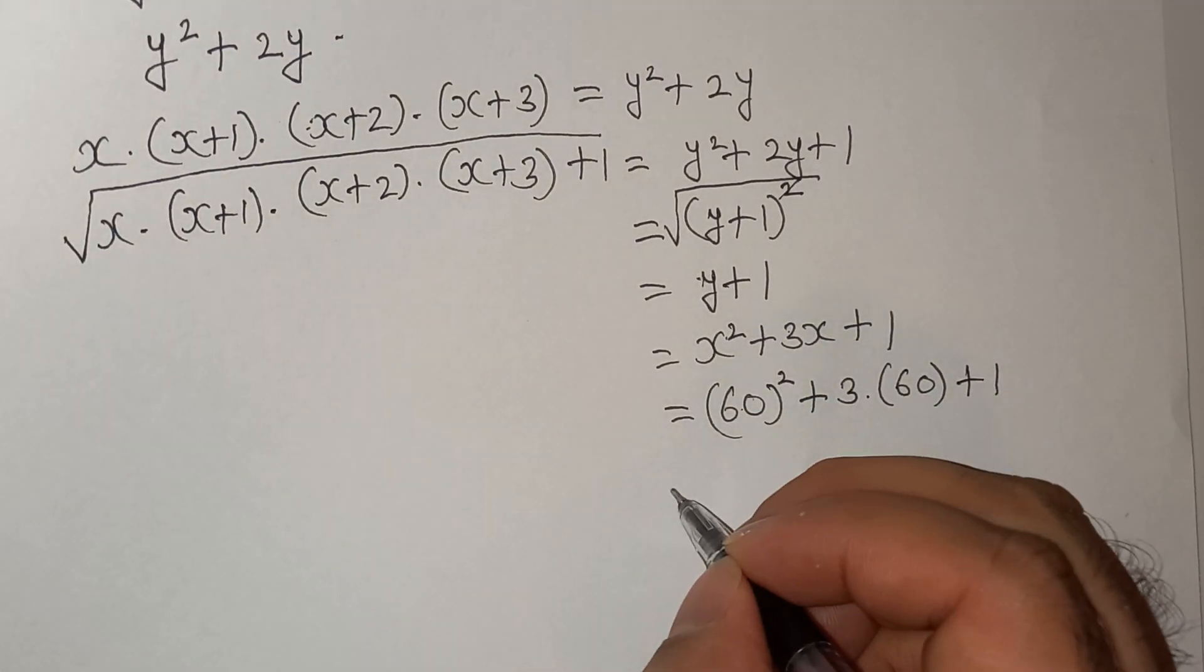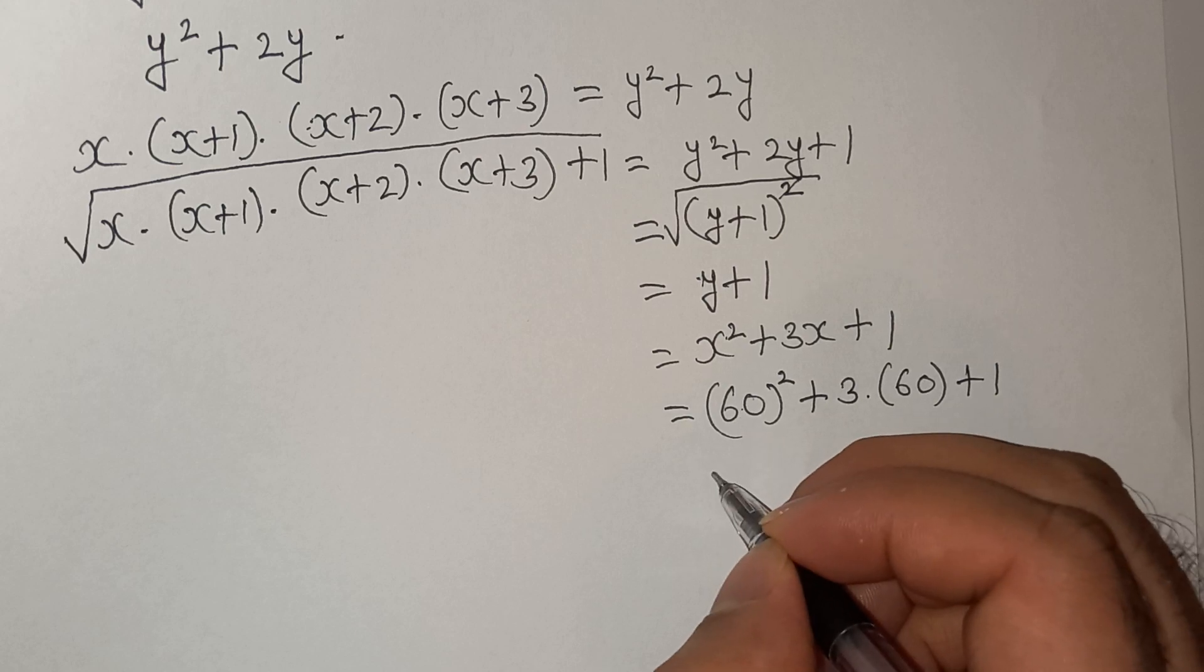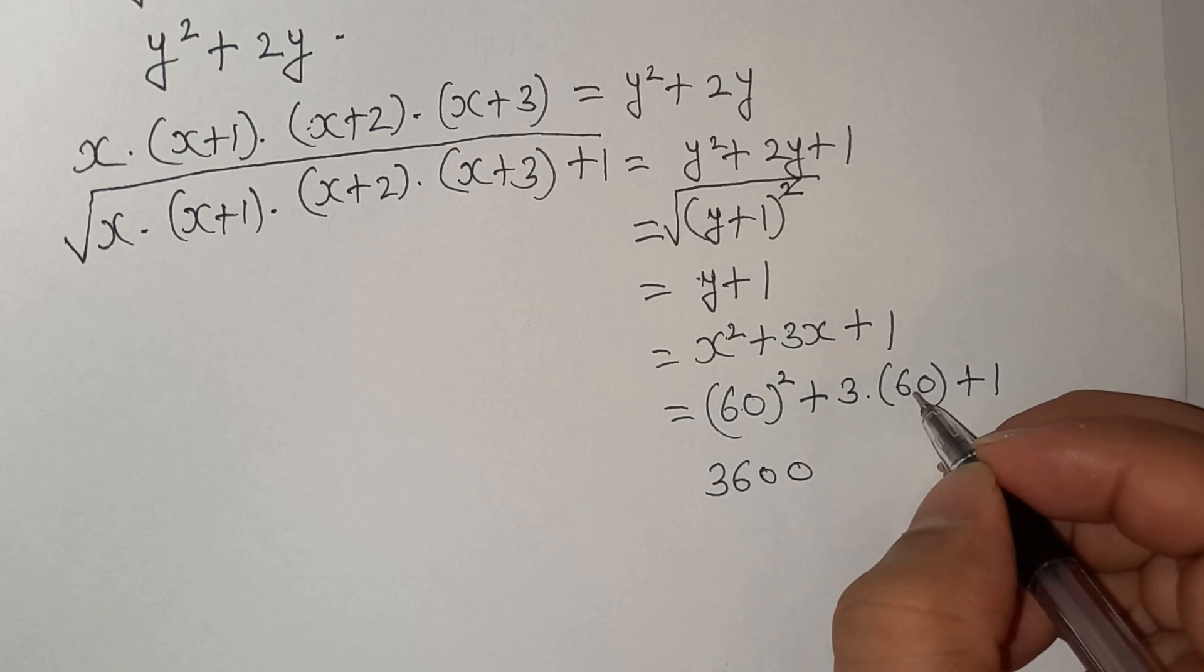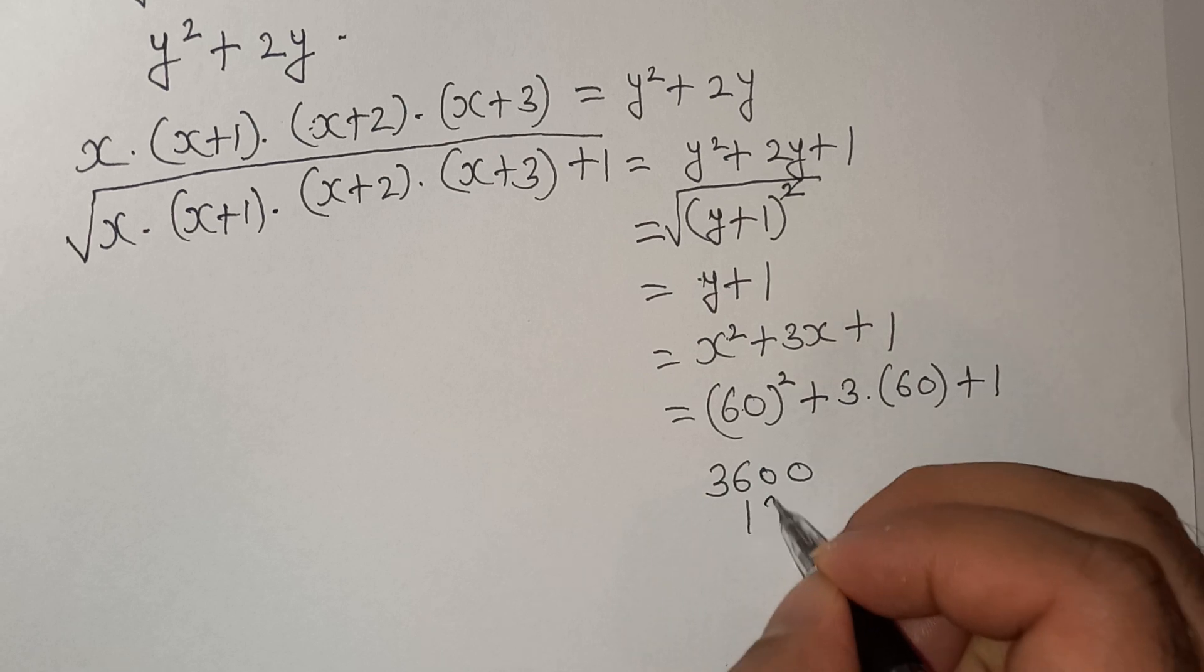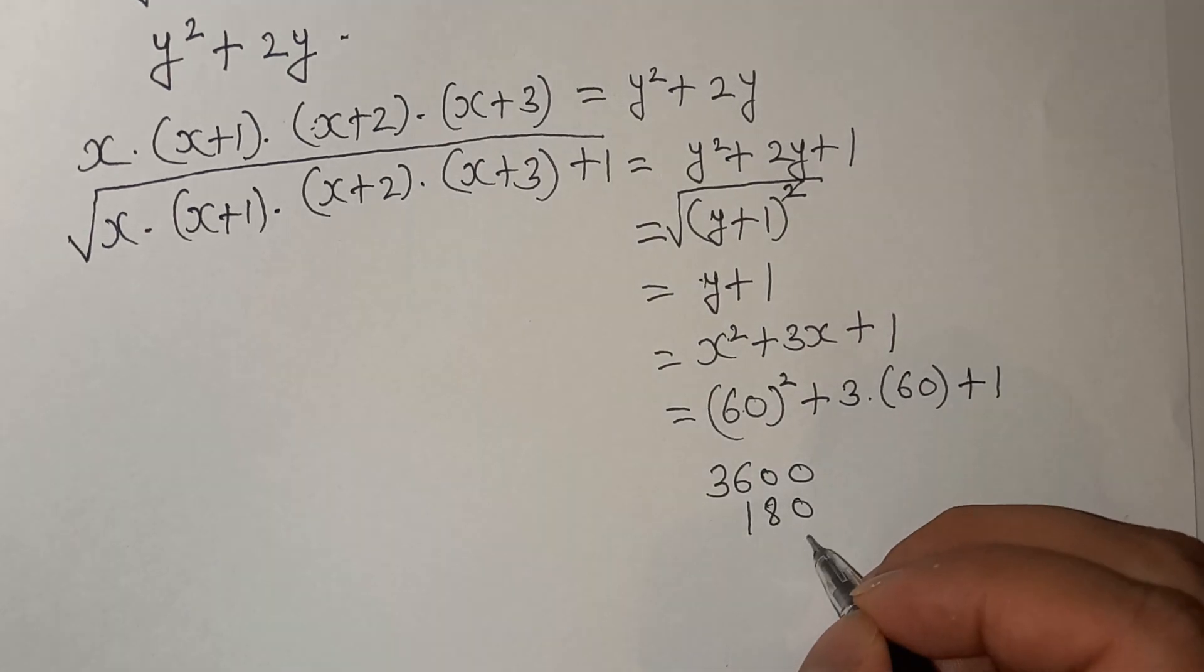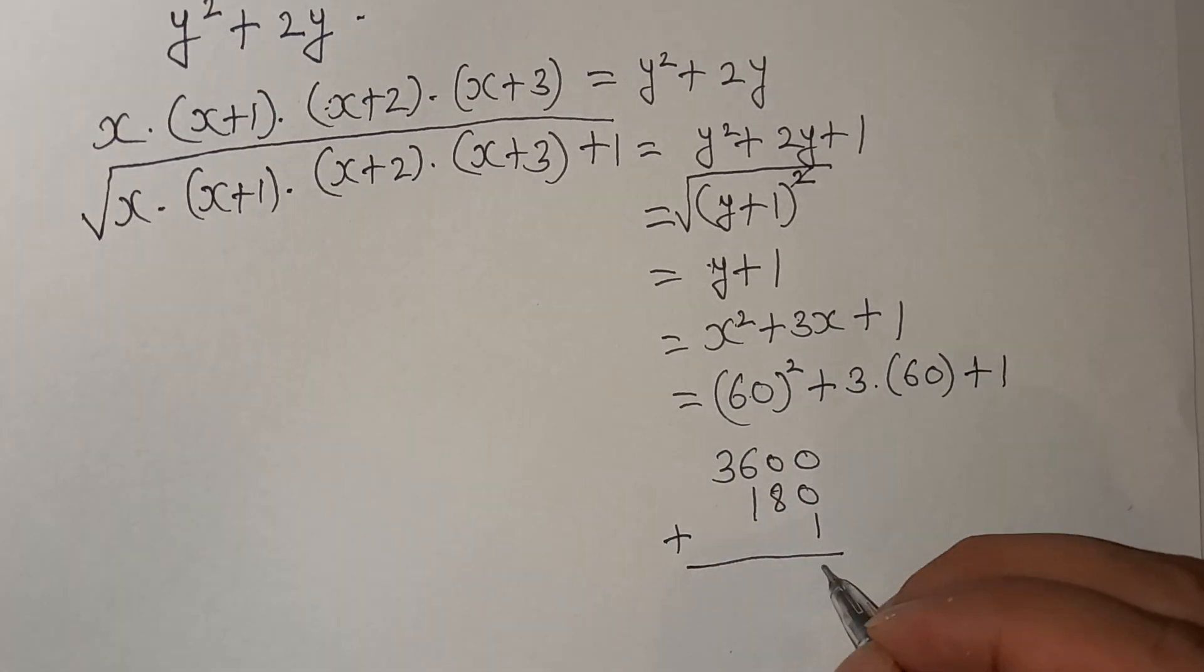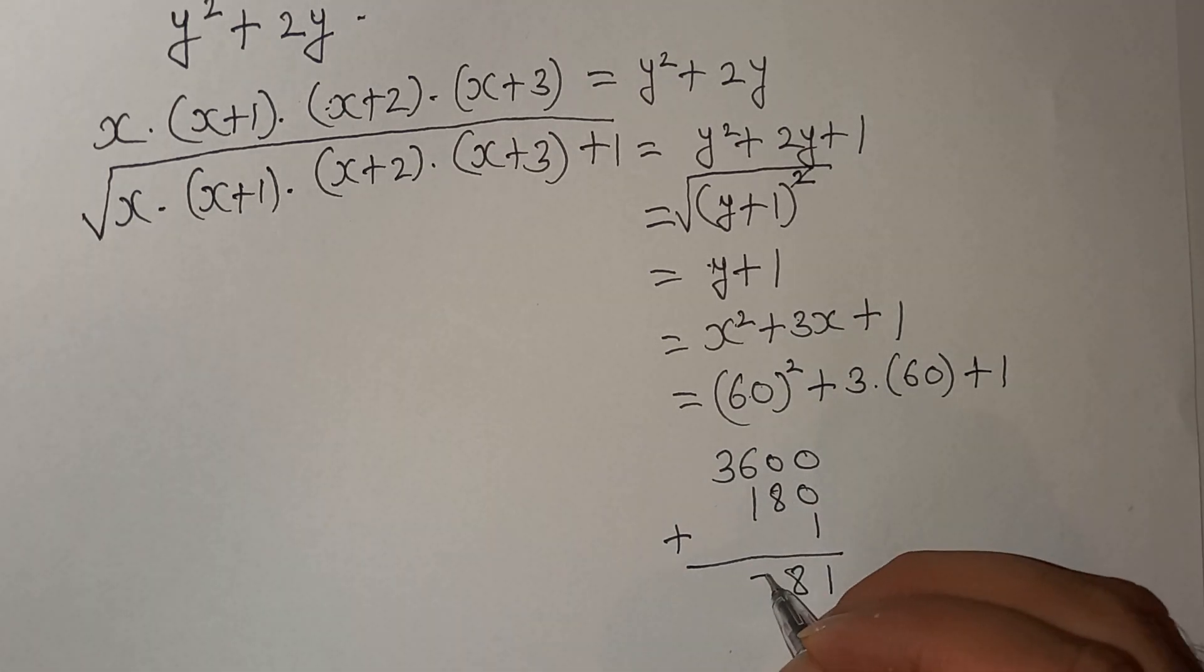We have 60² as 3600. 3 × 60 is 180, and then plus 1. So let's add it: 1, 8, 6 plus 1, 7 and 3. So this is our final answer: 3781.